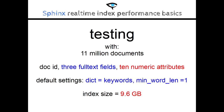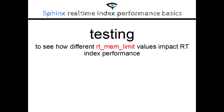We used a data set with 11 million documents consisting of document ID, three full-text fields — title, description, tags — and ten numeric attributes. The title field was also stored as a string attribute. Using default settings, dictionary equals keywords and min word length equals one, and the latest chunk version, the plain index was around 9.6 gigabytes in size. We compared the performance of this plain index to real-time indexes with different RT-MEMLimit values using the same data.